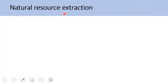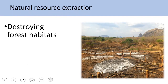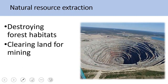The second on the list is natural resource extraction. Destroying forest habitat — we need wood as a resource for building and composite materials, so clearing the forest to have this resource destroys forest habitats. Clearing land for mining: the minerals are deep underground, but in order to reach them you have to clear large areas of land on the surface, and clearing large surface areas means destroying habitats in those areas.